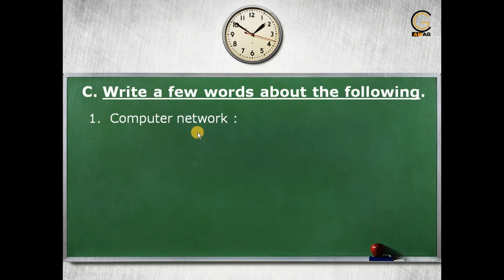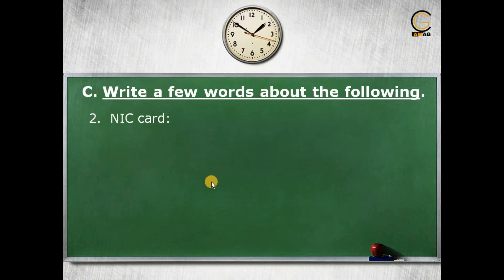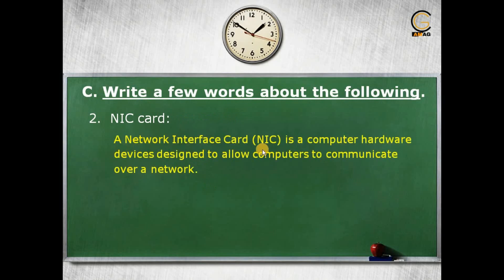Now moving to the next section: write a few words about the following. A computer network is a system for communication among computers and other peripherals. If we want to communicate between two or more computers or other peripherals, we need a system — that system is known as a computer network.